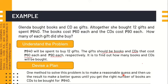840 pesos will be spent to buy 12 gifts altogether, and the gifts should be books and CDs. The cost of each book is 60 pesos and 90 pesos for the CDs respectively. So the question is to find out how many books and CDs will be bought — how many books and CDs altogether.